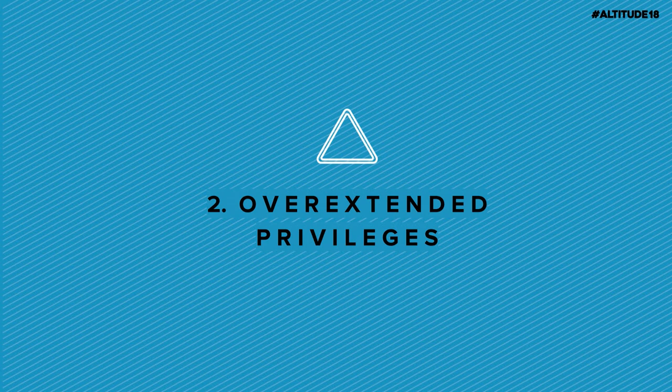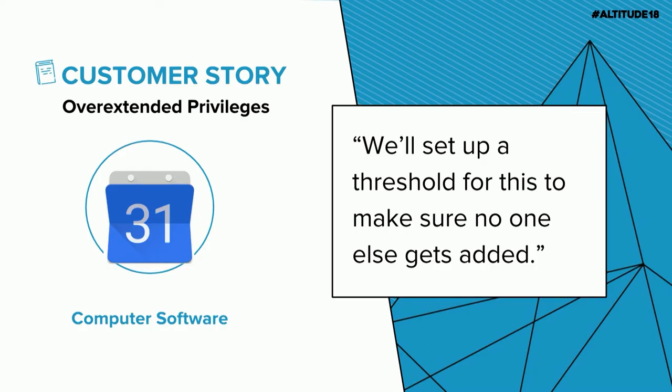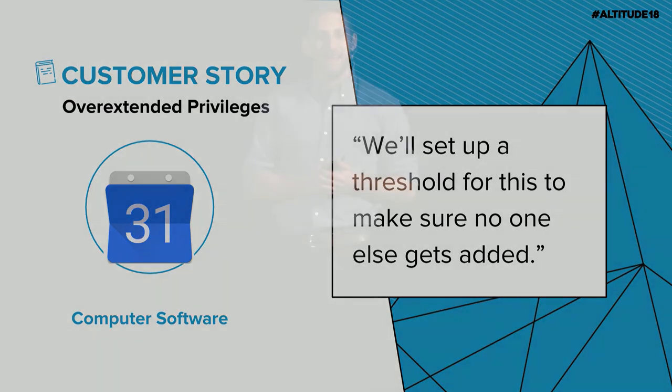The next risk area is overextended privileges. Yesterday Sean presented his scorecards, and I'm sure everyone saw an alert about who has super admin access in which system — and that number may have been higher than you expected. In this customer story, a customer had an office manager who just needed to manage calendar resources, but for some reason they were given full super admin access to the domain. What ended up happening is they were wandering around in the admin console and somehow stumbled onto the Drive page, and accidentally set the default sharing permission for Drive documents to domain-wide.